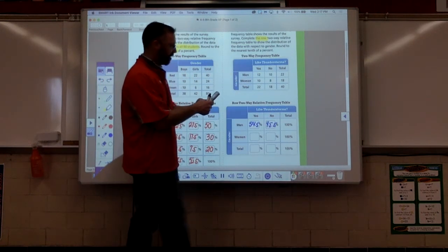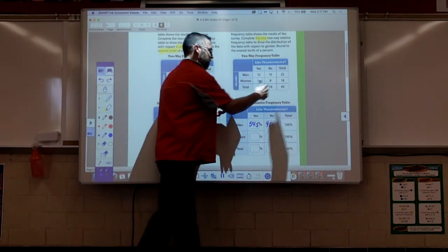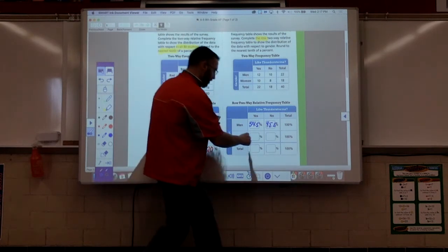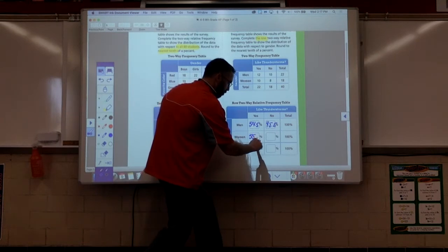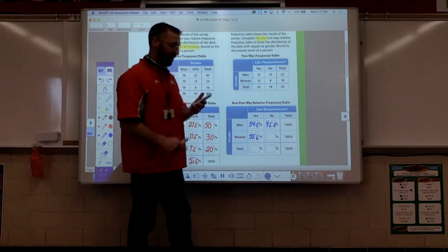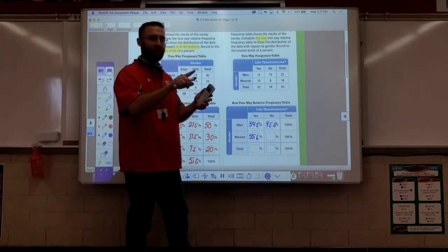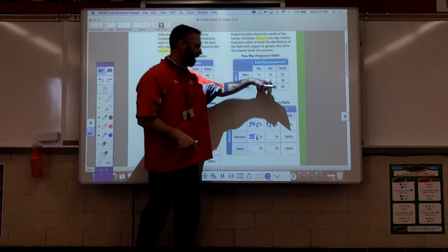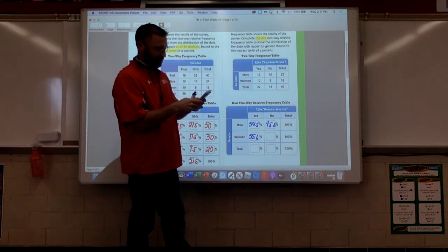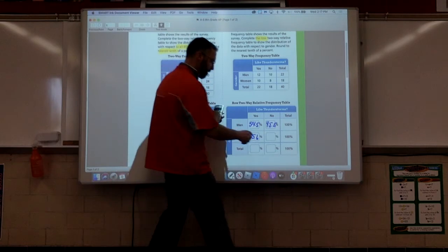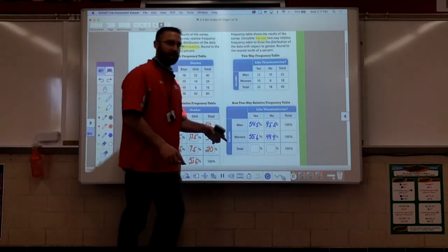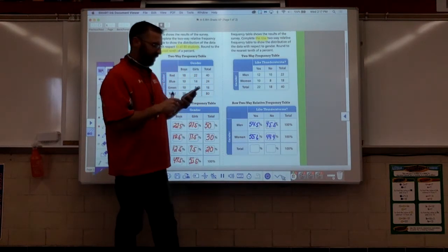As we go down to women, same thing. 10 compared to the total of that row, that's 18 times 100. This, 55.6 percent. It's 55.5 repeating, those 5s round that up to a 6. 8 out of 18. Holy smokes Mr. Freaky, I get to do all kinds of division. That comes out to be 44.4 repeating. Doesn't round up because that 4 is lower than 5.